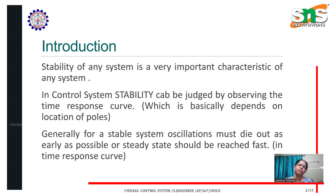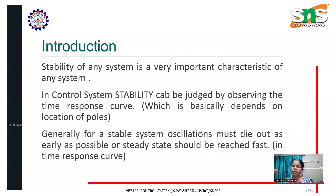Generally, for a stable system, oscillations must die out as early as possible. Our steady state should be reached faster. For a stable system, when the system subjects to some oscillations, it comes to stability within a particular time interval. The system comes to stable state as soon as possible — as early as possible. Our steady state should be reached faster.